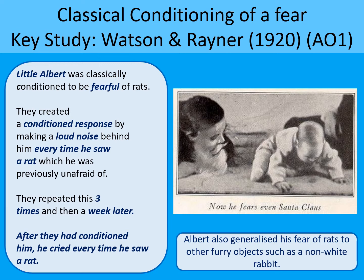Little Albert was six months old and he wasn't scared of rats. Watson and Rayner decided to try and initiate a phobia of rats in him through classical conditioning, which means learning by association. They showed Little Albert some rats and he quite liked them — he was curious and not really bothered. Then they made a really loud banging sound behind him, which frightened him. They paired the loud bang with the rat every time until eventually, even when Little Albert saw the rat, he was very fearful because he had learned to associate the loud bang with the rat.